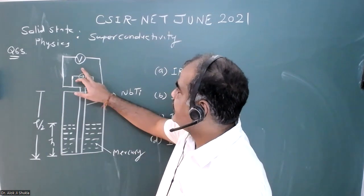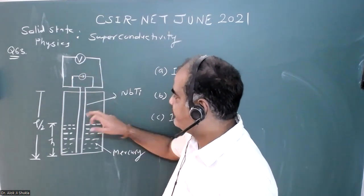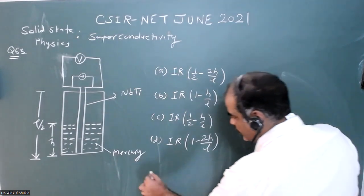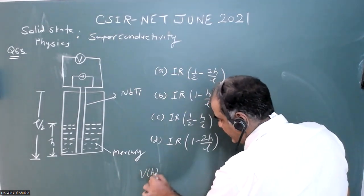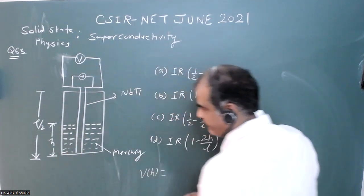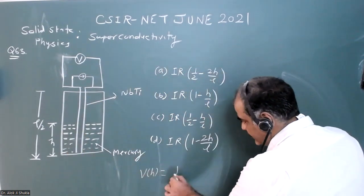Then the voltage across this wire should be zero. We see option D. Option D says if the height of the wire is filled with mercury.